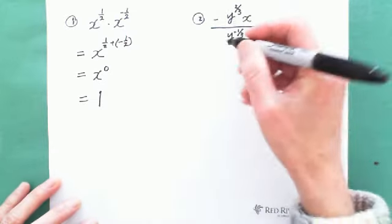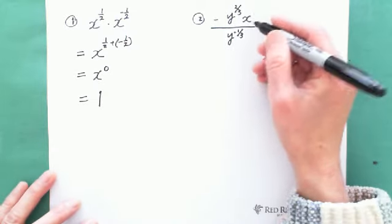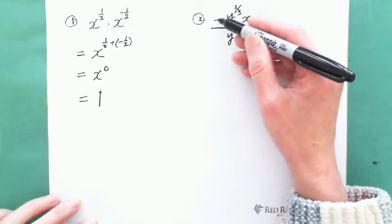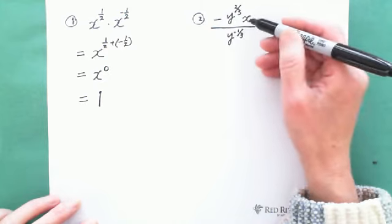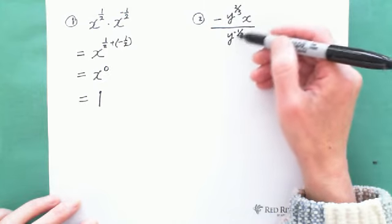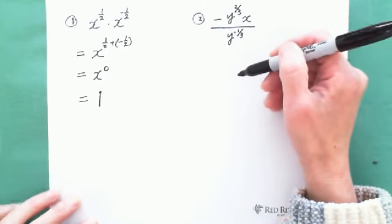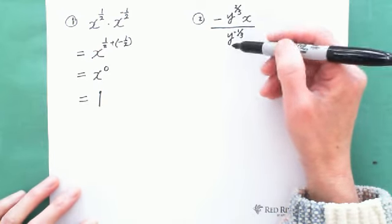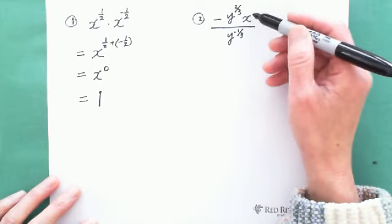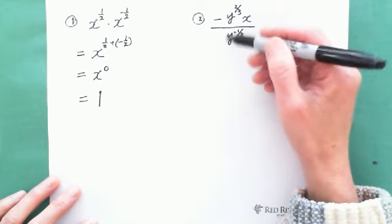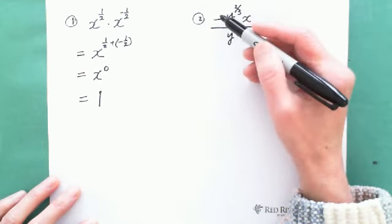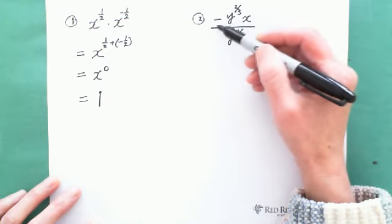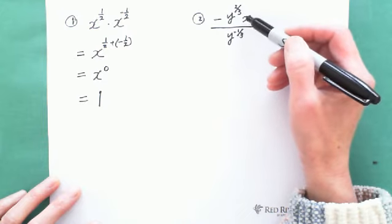The second question: we have y to the 2/3 exponent with a negative in front, multiplied by x, and the denominator is y to the negative 1/3 exponent. First, we combine y with y because they have the same base, and x has exponent 1 — it's not related to y. Also, pay attention to this negative sign: it is not related to the exponent because there are no brackets.